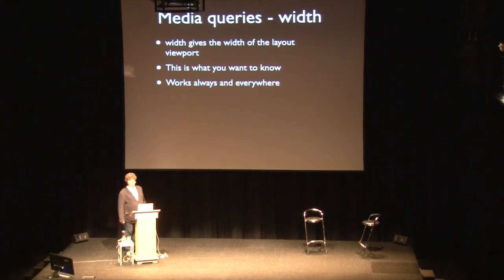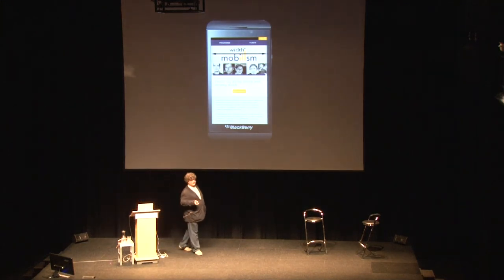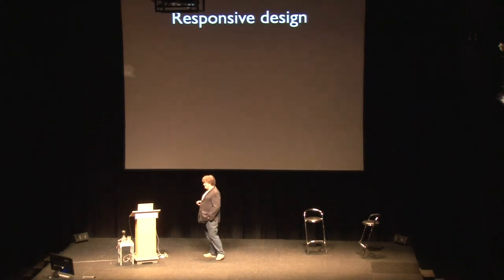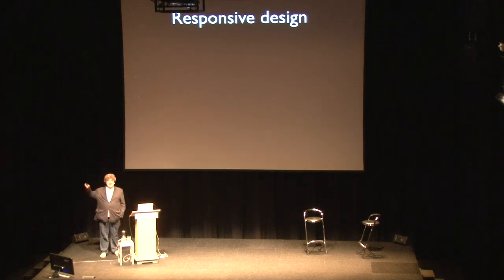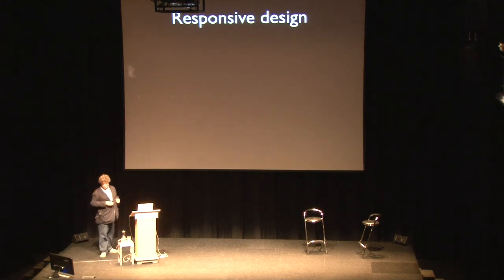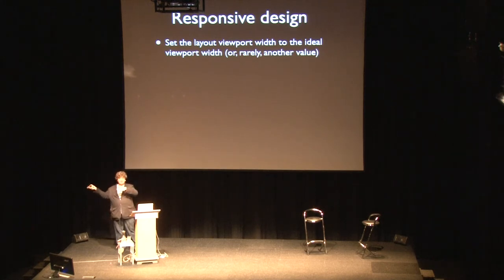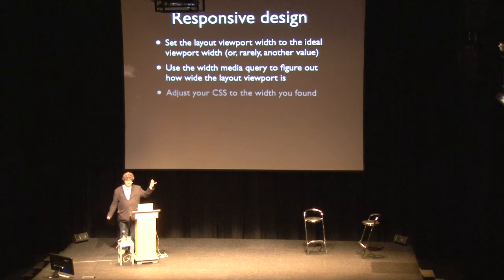On desktop, width equals the width of the browser window — the information you're after. On mobile, width equals the width of the layout viewport — also the information you're after, especially after you've constrained the layout viewport to the ideal viewport so it fits the screen perfectly. It works always and everywhere — 50 browsers. When you combine the meta viewport with the width media query, you get a proper responsive design. That's kind of why responsive design works. You already knew the code — I hope I've taught you why it works.